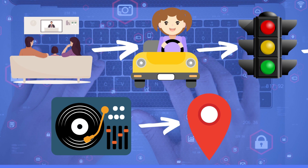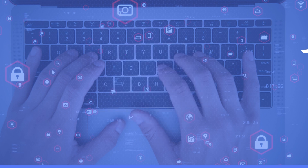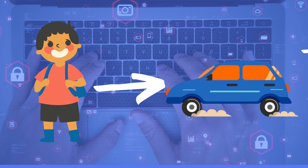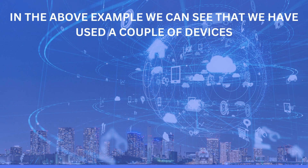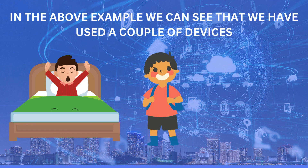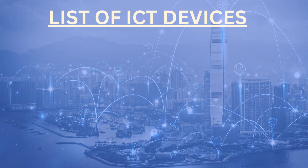In this whole sequence of steps — from getting ready to sitting in the car — we have not turned on any computer or used a phone. But do you think we are using any ICT devices? Take a moment to think about how many ICT devices we have used in this example. Moving forward, we can see that from getting up to reaching school or office we are using many ICT devices without even realizing it.